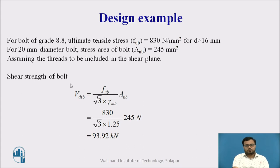And the shear strength of bolt VDSB is equal to FUB by root 3 gamma MB into ANB equal to 93.92 kN. FUB is equal to 830. This is root 3 gamma MB 1.25. ANB is equal to 245, which is equal to 93.92 kN.